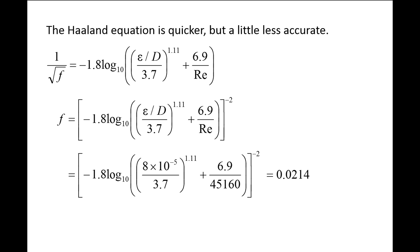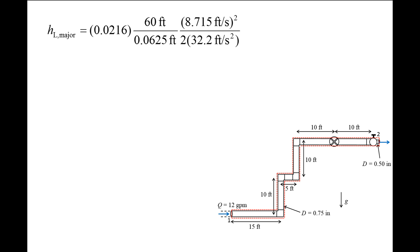On your own, check that the friction factors obtained using the Colebrook equation and Halland equation are close to the value obtained using a Moody chart. Plugging in the values for the friction factor, pipe length, pipe diameter, and average speed into the major loss equation, we find that the major head loss is 24.46 feet.